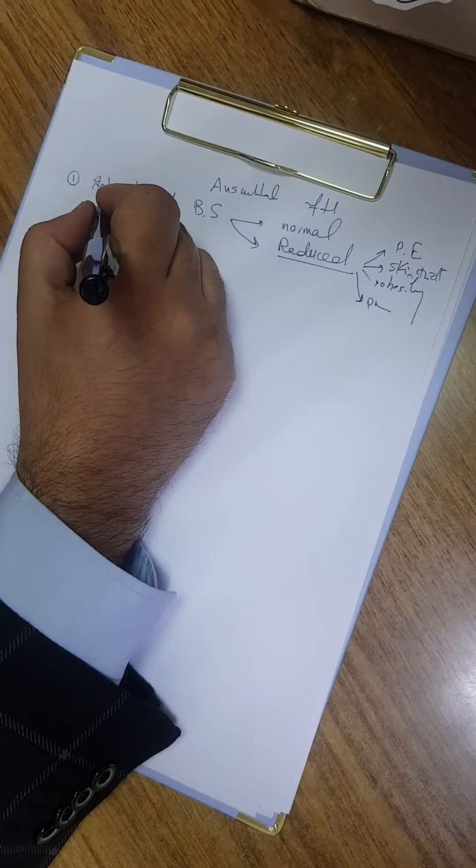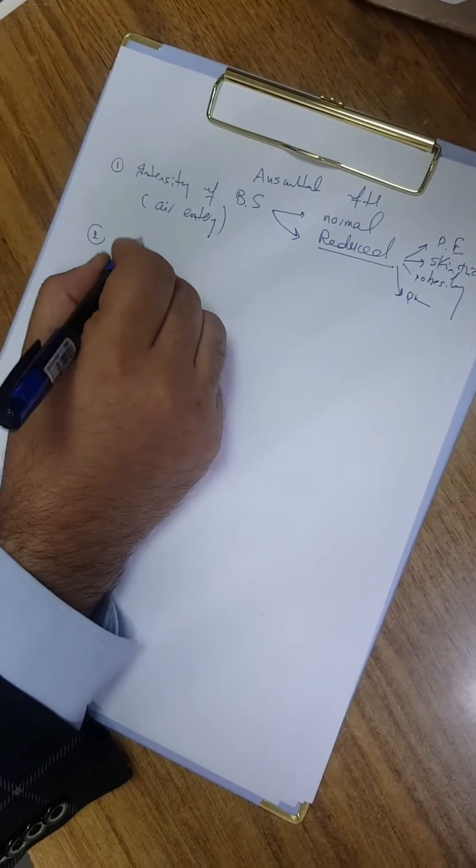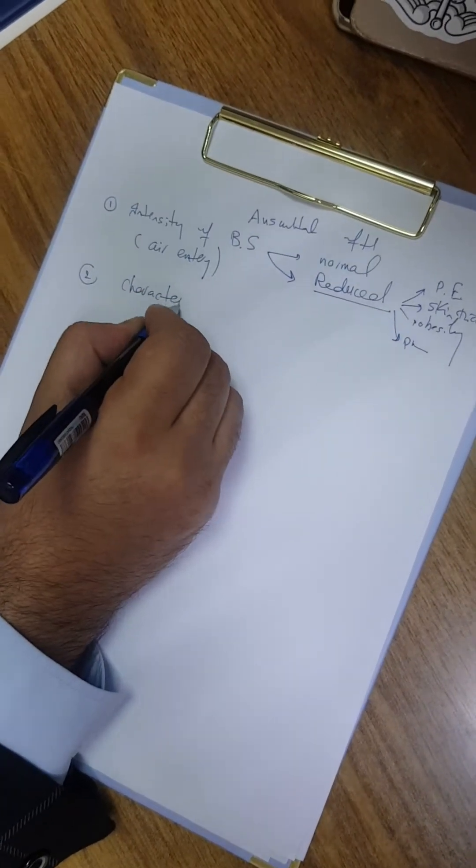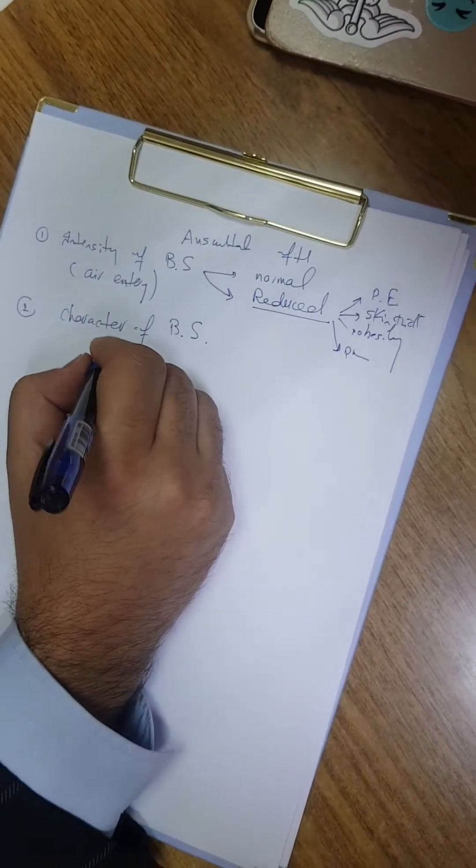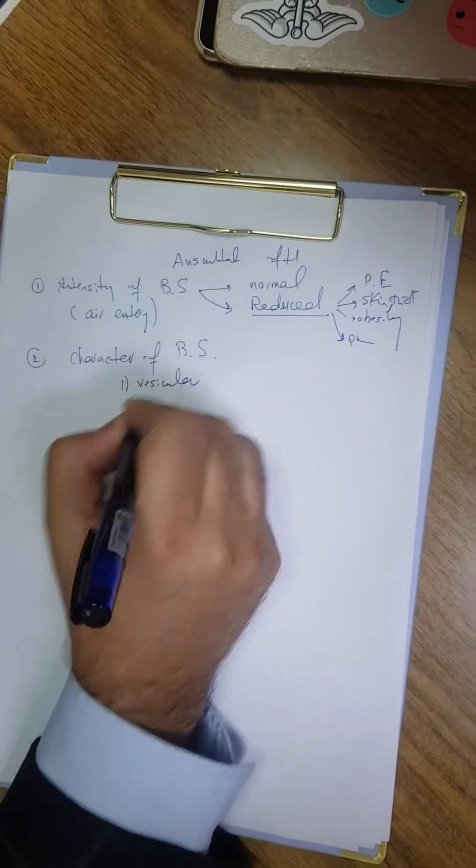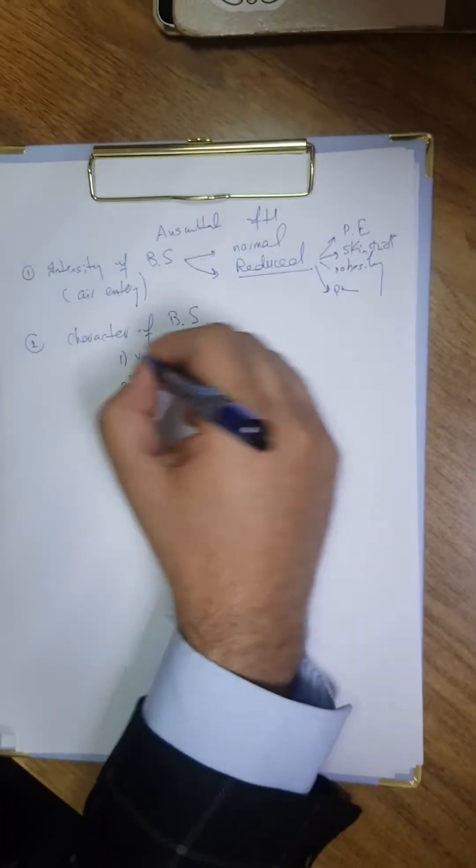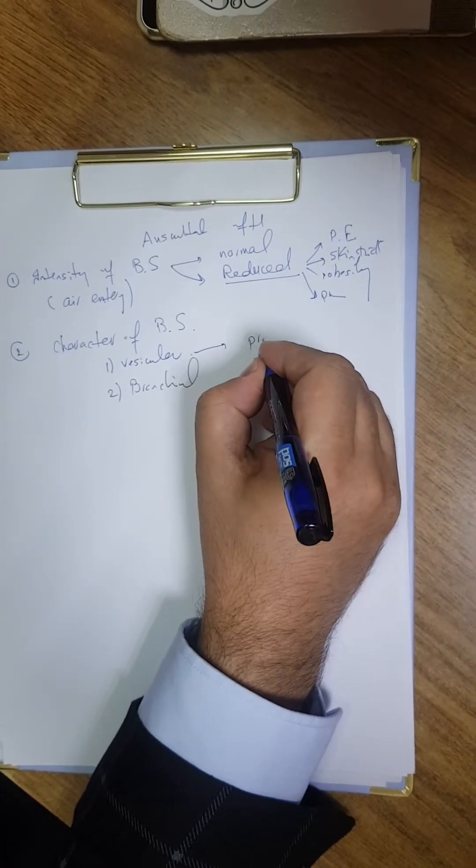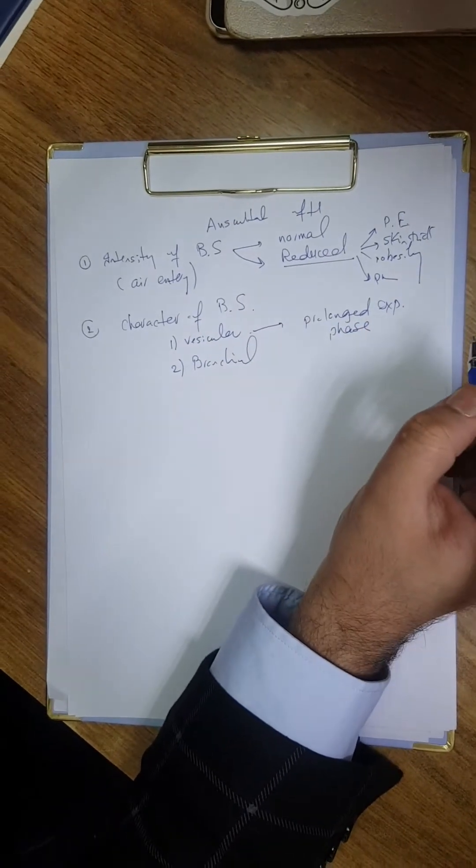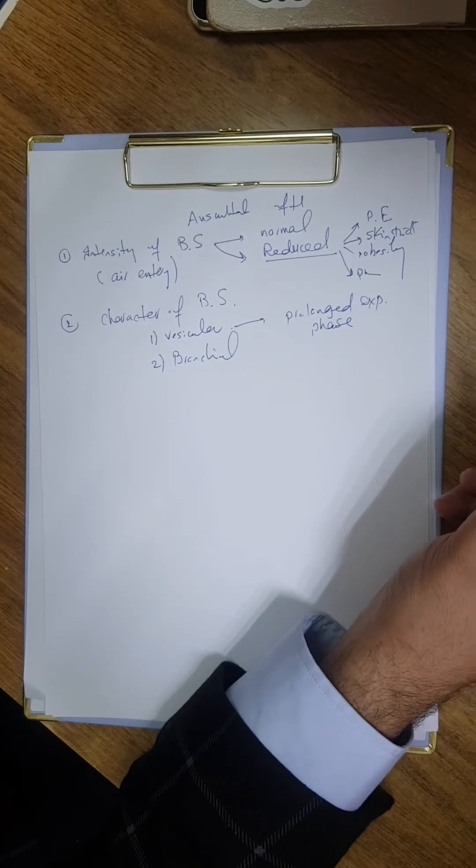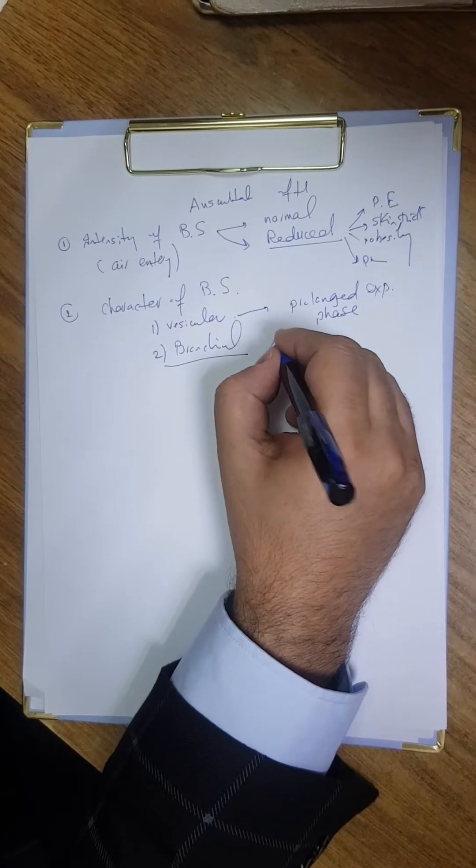The second part is the character of breath sounds. The character of breath sounds will be either vesicular, which is the normal, or bronchial. The vesicular breath sounds can have a prolonged expiratory phase, which may indicate obstructed airways. Bronchial breathing is the hallmark of consolidation.